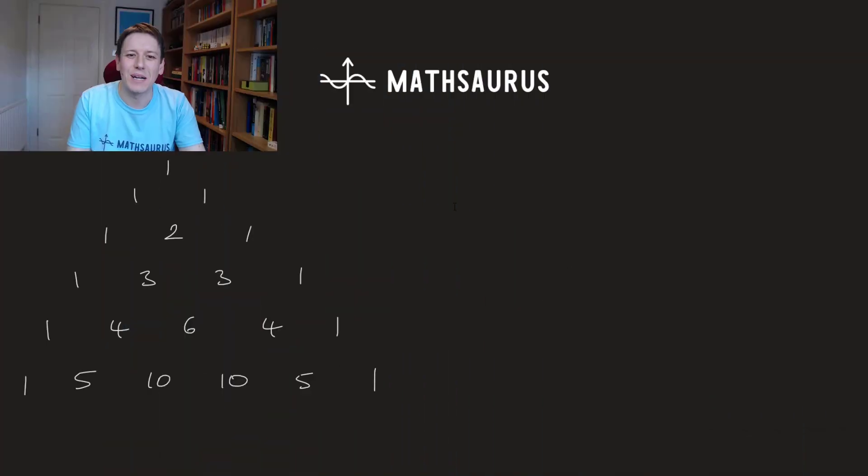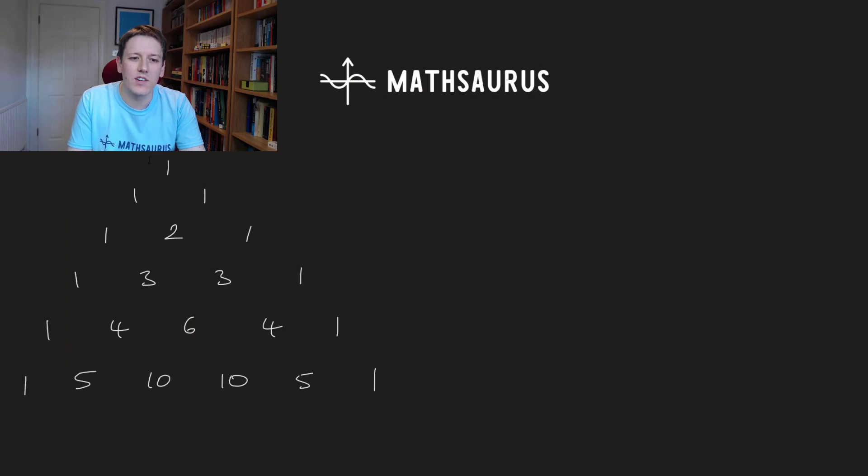So here's another interesting thing about Pascal's triangle. Let's have a look at the sum of each of the rows here. The first row just has a 1 in it, so its sum is 1. In the next row I've got 1 plus 1 is 2. Then I've got 1 plus 2 plus 1 is 4. 1 plus 3 plus 3 plus 1 is 8. If you add all these together you'll get 16. If you add all of these together you'll get 32.